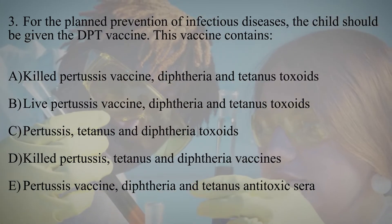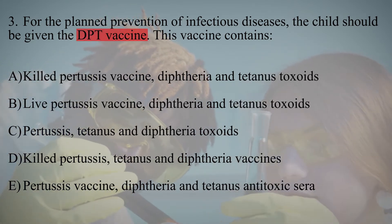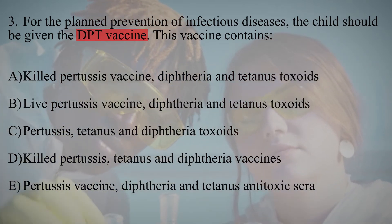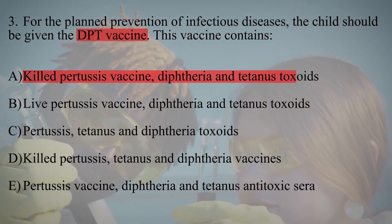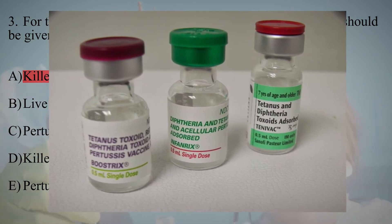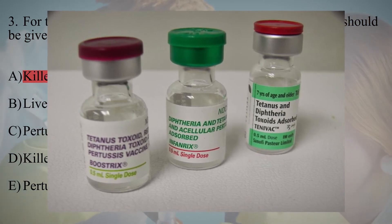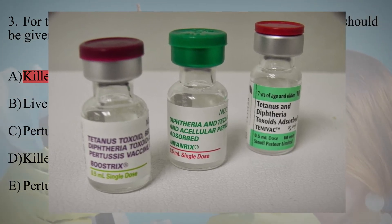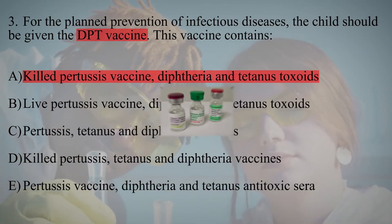For the planned prevention of infectious diseases, the child should be given the DPT vaccine. This vaccine contains killed pertussis vaccine, diphtheria and tetanus toxoids. Toxoid is an exotoxin neutralized by formalin. This vaccine can be either whole-component from the pertussis pathogen or acellular, including three antigens from Bordetella pertussis.